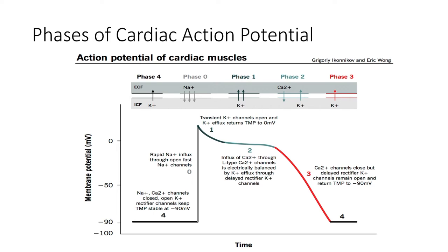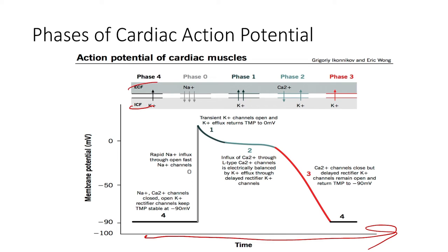To orient ourselves, we're going to go over the axes. On the x-axis, we have time — these events will be occurring in sequential order and succession of each other. On the y-axis, we have the membrane potential, a transmembrane potential, which is the gradient of ions and charges from the intracellular fluid to the extracellular fluid.